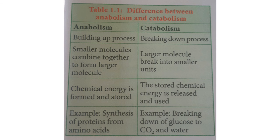In anabolism, chemical energy is formed and stored. For example, through photosynthesis, plants produce their own food, which is stored in the form of starch in the cell. In catabolism, the stored chemical energy is released and used — released at the time of respiration. Oxygen oxidizes the stored glucose, breaking it down into carbon dioxide and water. An example of anabolism is the synthesis of proteins from amino acids. An example of catabolism is the breakdown of glucose to carbon dioxide and water during respiration.